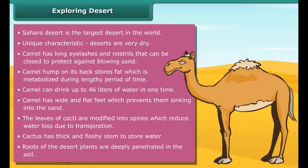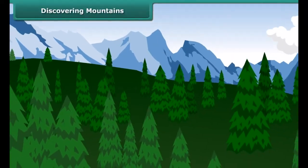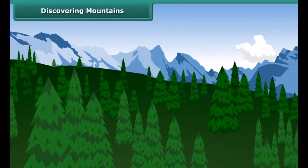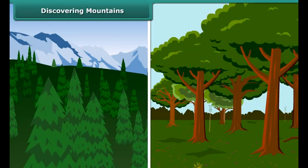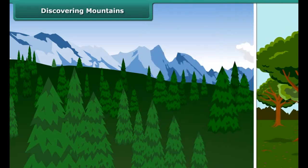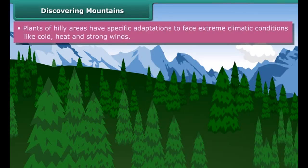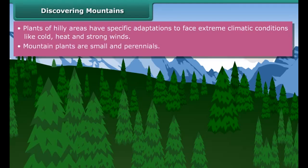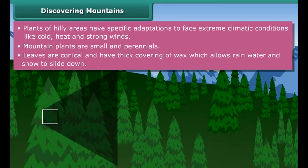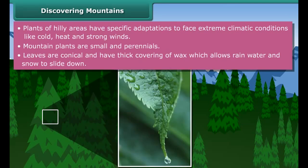Wide and flat feet prevent the camel from sinking into the sand. Similarly, plants like cacti also show various adaptations to survive in a dry and hot environment. The leaves of cacti are modified into spines, which reduce water loss due to transpiration. Cactus has a thick and fleshy stem to store water, and roots of desert plants deeply penetrate the soil to absorb water.